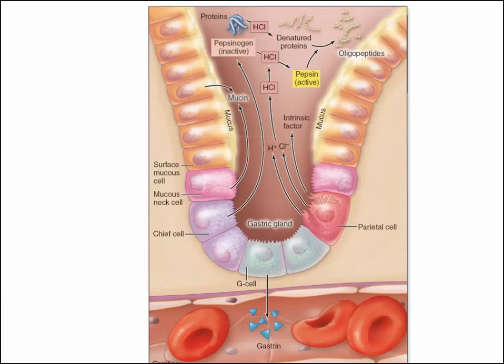Here we can see our four different cell types: the surface mucosal cells, the mucous neck cells — with more mucous neck cells as we move down into the pit — and then the chief cells as well as the parietal cells.